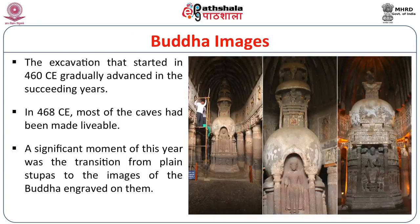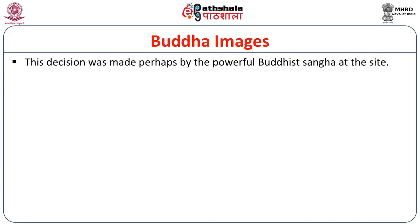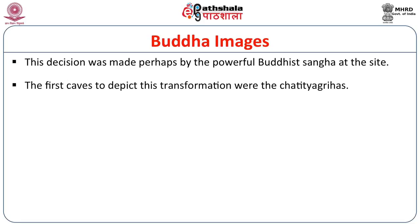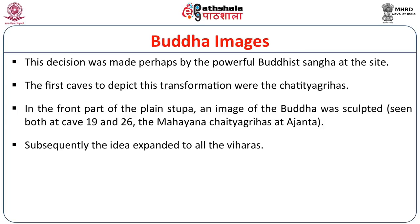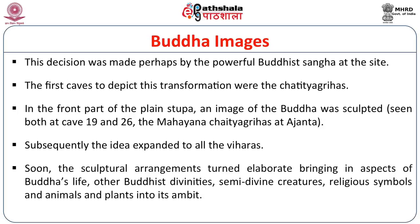The excavation that started in 460 CE gradually advanced in succeeding years. By 468 CE, most of the caves had been made livable. A significant moment of this year was the transition from plain stupas to images of Buddha being engraved on them — a decision made perhaps by the powerful Buddhist Sangha members. The first caves to depict this transformation were the Chaitya Grihas: in the front part of the plain stupa, an image of Buddha was sculpted, as seen in both Cave 19 and Cave 26, the Mahayana Chaitya Grihas at Ajanta. The sculptural arrangements turned elaborate, bringing in aspects of Buddha's life, other Buddhist divinities, semi-divine creatures, religious symbols, animals and plants.